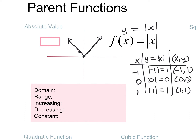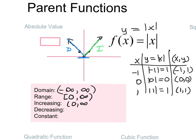The domain for this absolute value graph is going to be all real numbers, negative infinity to positive infinity. The range — as I walk up the y-axis from bottom to top, the first y value I encounter is right here at 0, so my range goes from 0 with a bracket, because it's a closed circle, to infinity. For increasing/decreasing: the left side is decreasing, the right side is increasing. It increases from 0 to infinity, and decreases from negative infinity to 0. The constant is DNE.